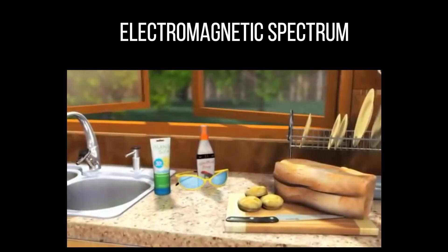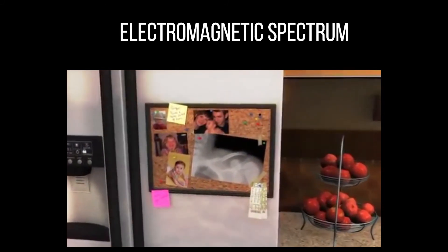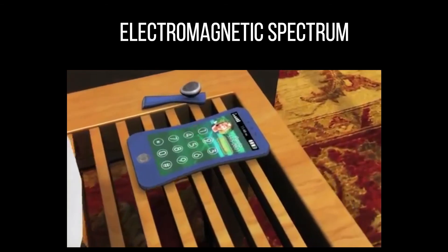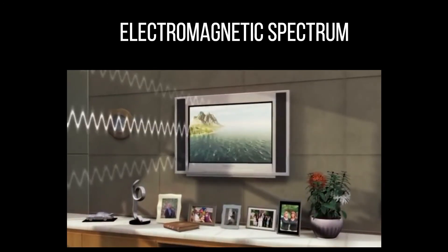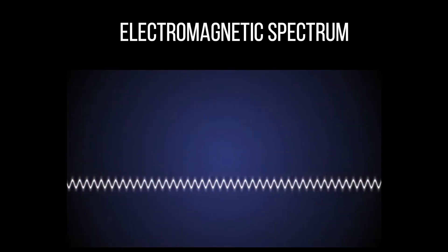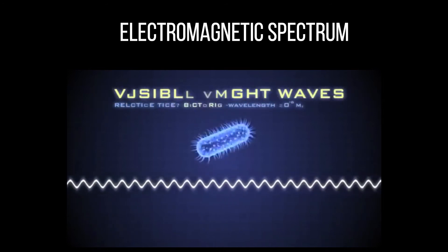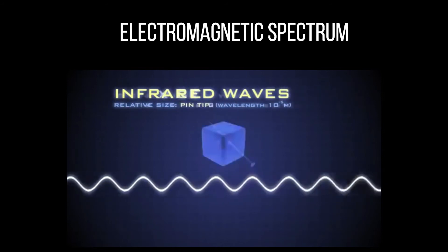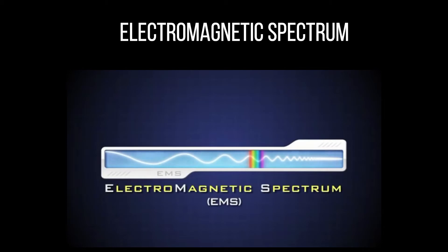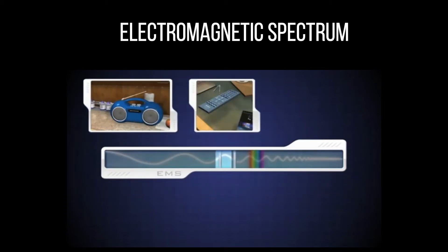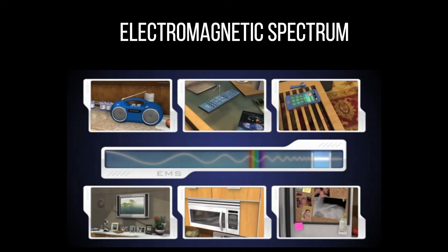Something surrounds you, bombards you — some of which you can't see, touch, or even feel. Every day, everywhere you go, it is odorless and tasteless, yet you use and depend on it every hour of every day. Without it, the world you know could not exist. What is it? Electromagnetic radiation. These waves spread across a spectrum from very short gamma rays to X-rays, ultraviolet rays, visible light, infrared waves, microwaves, to radio waves — which can measure longer than a mountain range. This spectrum is the foundation of the information age and of our modern world. Your radio, remote control, text message, television, microwave oven, even a doctor's X-ray — all depend on waves within the electromagnetic spectrum.